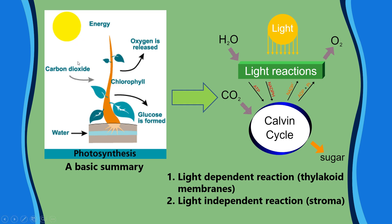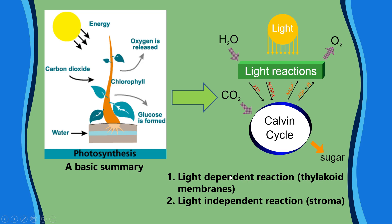At GCSE you will have learned that sunlight energy is used to combine carbon dioxide and water to make glucose, with oxygen released as a waste product, all happening with chlorophyll — the pigment that absorbs light. Now we'll add more detail. There are two types of reaction: the light-dependent reaction, which needs light directly, and the light-independent reaction, which doesn't need light directly but does need products from the light-dependent reaction. The light-dependent reaction occurs in the thylakoid membranes of the chloroplast; the light-independent reaction occurs in the stroma.